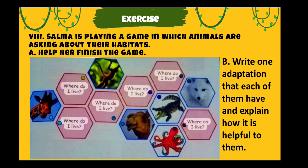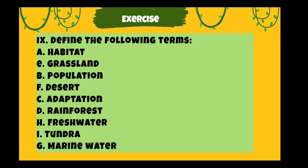Number eight: Salma is playing a game in which animals are asking about their habitats. Help her finish the game. Write one adaptation that each of the animals shown in the picture has and explain how it is helpful to them. Number nine: define the following terms — habitat, grassland, population, desert, adaptation, rainforest, freshwater, tundra, marine water.